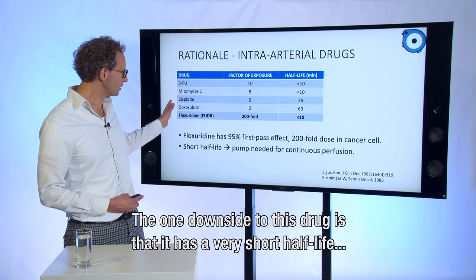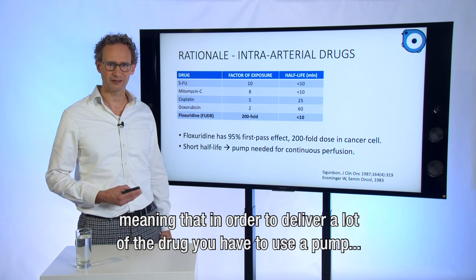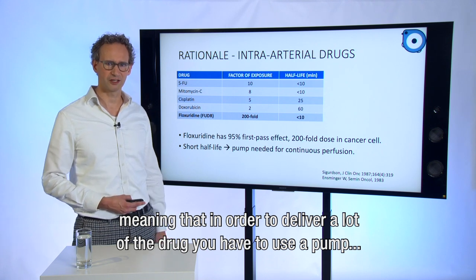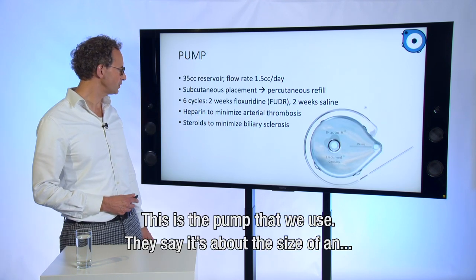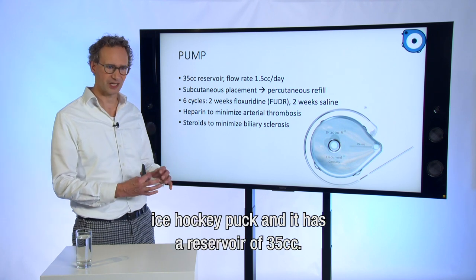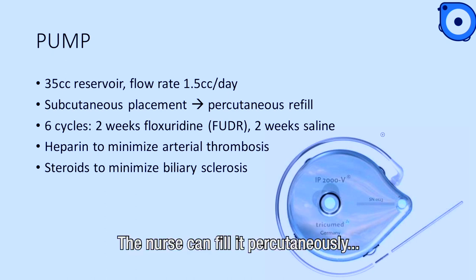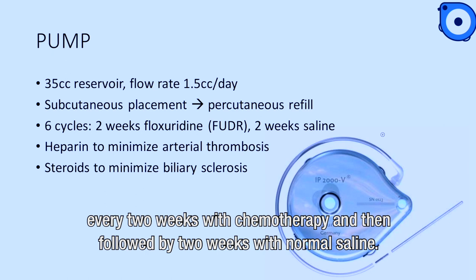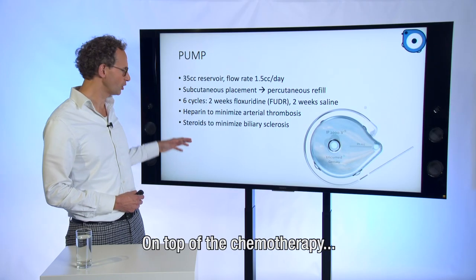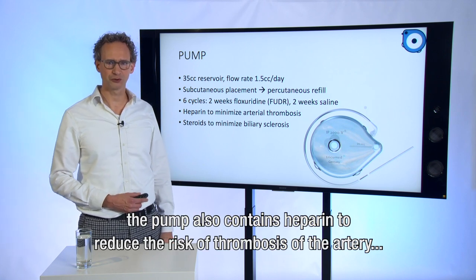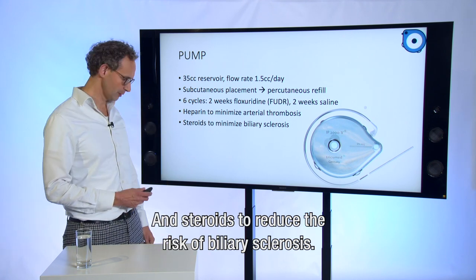There's one downside to this drug: it has a very short half-life, meaning that in order to deliver it, you have to use a pump so you can give continuous perfusion. This is the pump we use — it's about the size of an ice hockey puck and has a reservoir of 35cc. The nurse can fill it percutaneously every two weeks with chemotherapy, followed by two weeks with normal saline. Most people get six cycles. On top of the chemotherapy, the pump also contains heparin to reduce the risk of thrombosis of the artery, and steroids to reduce the risk of biliary sclerosis.